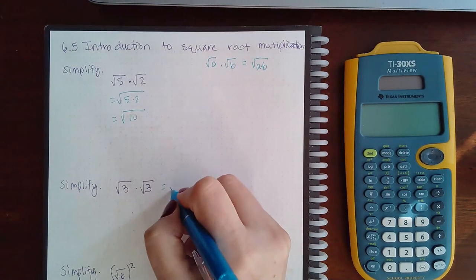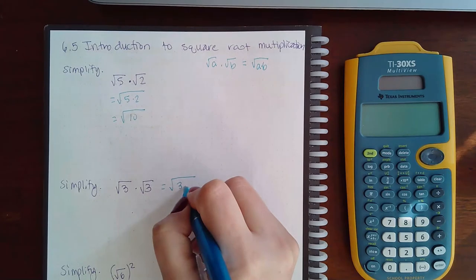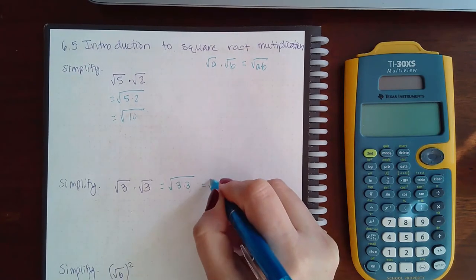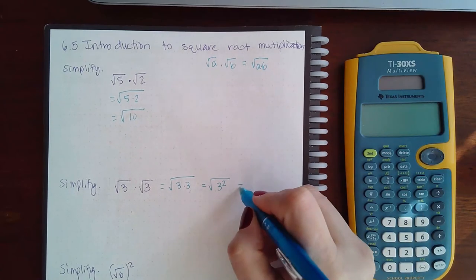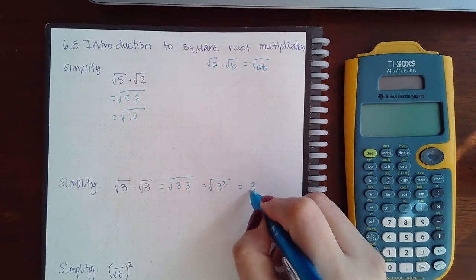Whereas this problem is a little bit different. I multiply 3 times 3 on the inside—that is a pair and it can be written as 3 squared. Then the square root of the square cancel and you just end up with 3 without a house at all.